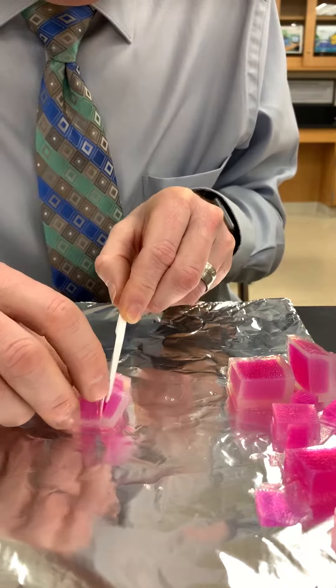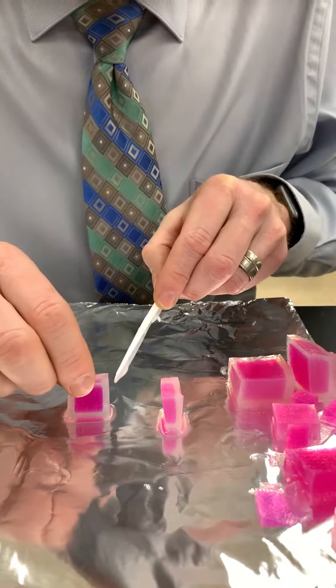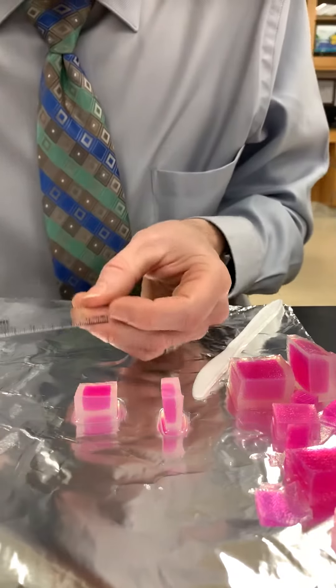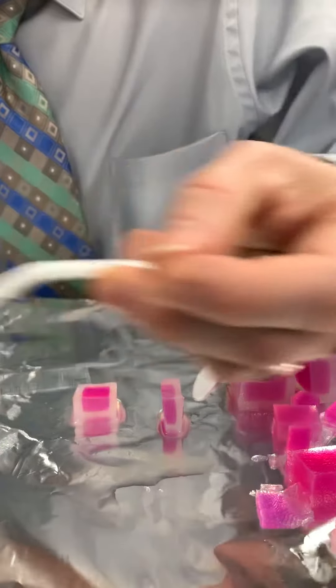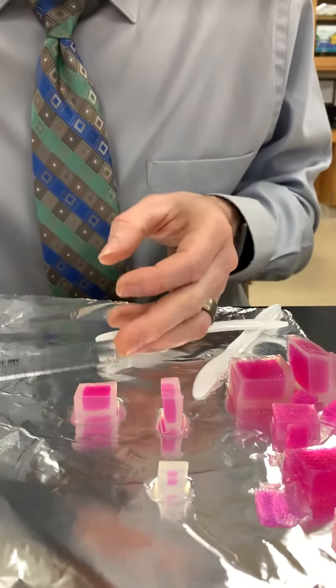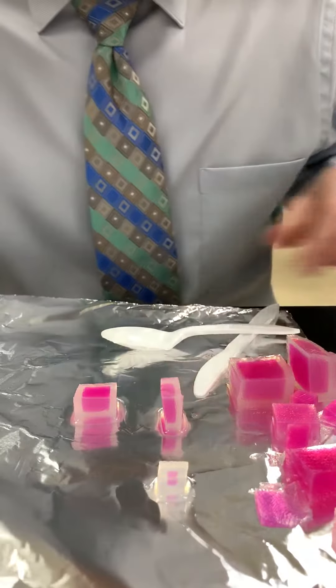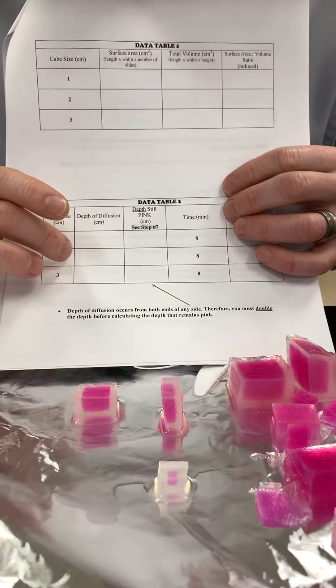You can see the diffusion there. We take our ruler and measure—oh, I need to take the 1x1 out as well. Let me measure, and I get about 0.35. So I'm going to write 0.35 for the 2x2x2.